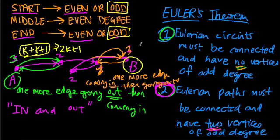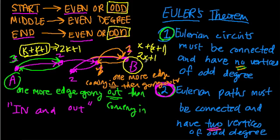So no matter how we look at this, the number of edges has to be odd at A and odd at B. For B, if you have one edge going out, then you have two edges coming in, and altogether that's three edges — odd. So we can establish that paths have two vertices of odd degree: the beginning and the end.